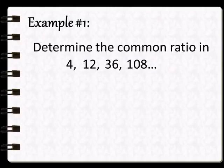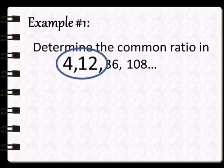Example number 1, determine the common ratio in 4, 12, 36, and 108. Sa example na ito, ang first term ay 4, at ang second term ay yung 12, and so on. Para makuha natin yung common ratio, kailangan natin i-divide yung second term to the first term, bali yung 12 at 4.